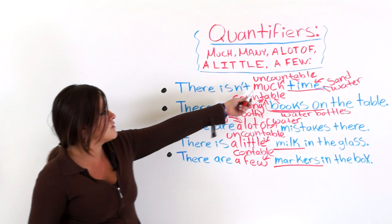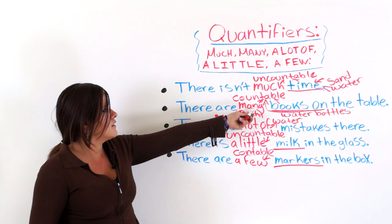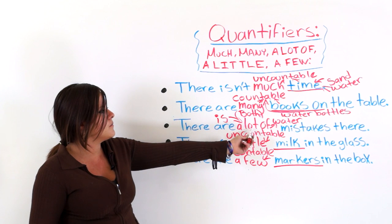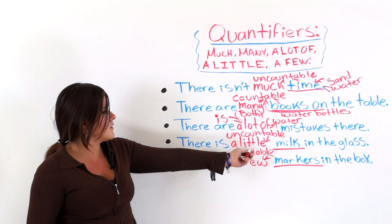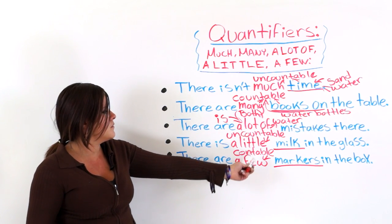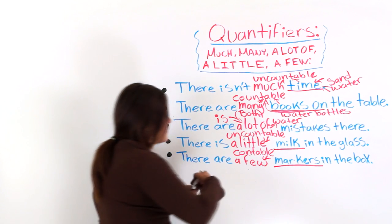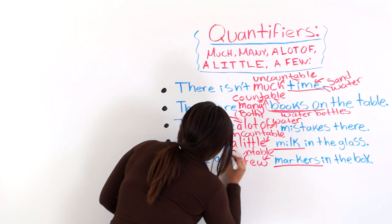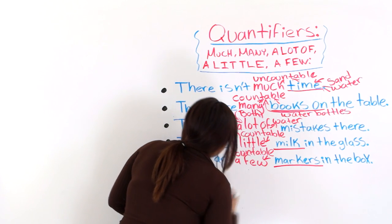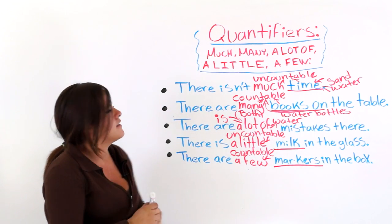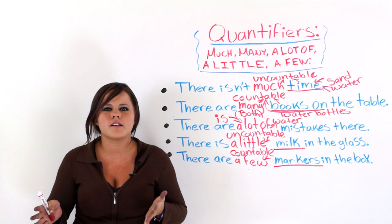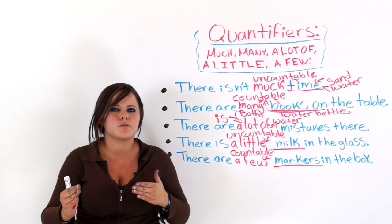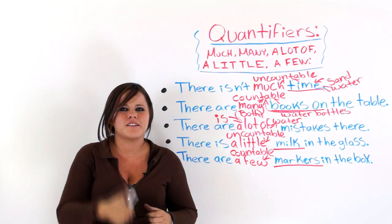Remember: much — for uncountable. Many — countable. A lot of — both, this is the only one that works for both. A little — uncountable. And a few — countable. Okay guys, next we're going to do some exercises so you can get it a little bit more clearly. We're going to do a little bit of brainstorming. Thank you for watching this video.